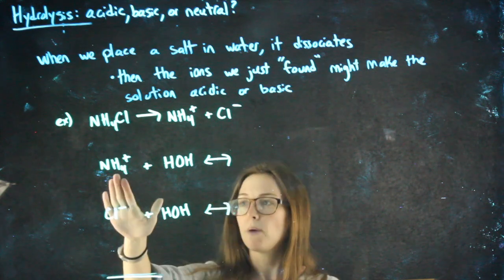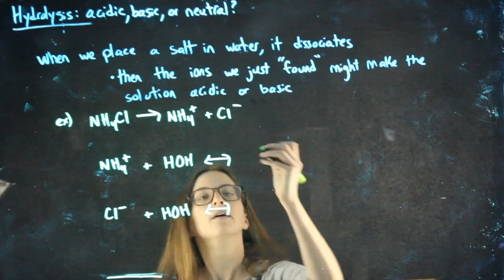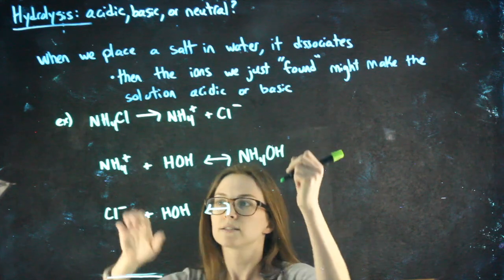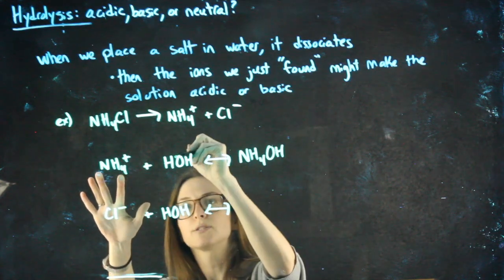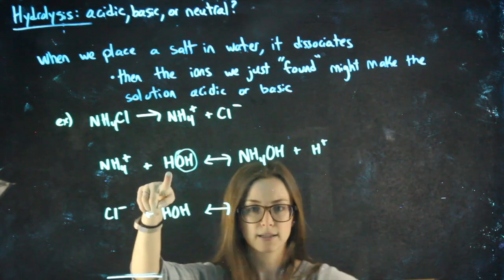Okay? So, positive ion would react with the negative part of water. NH4+ is going to react with the OH-. So, if the NH4+ comes and reacts with the OH-, that leaves H+ left over.